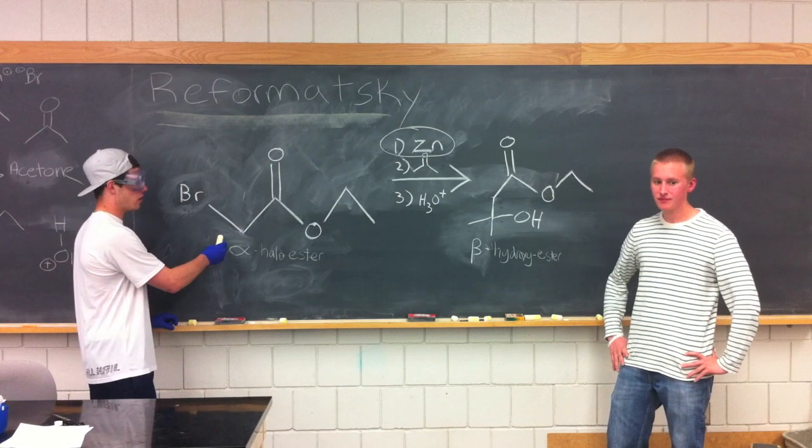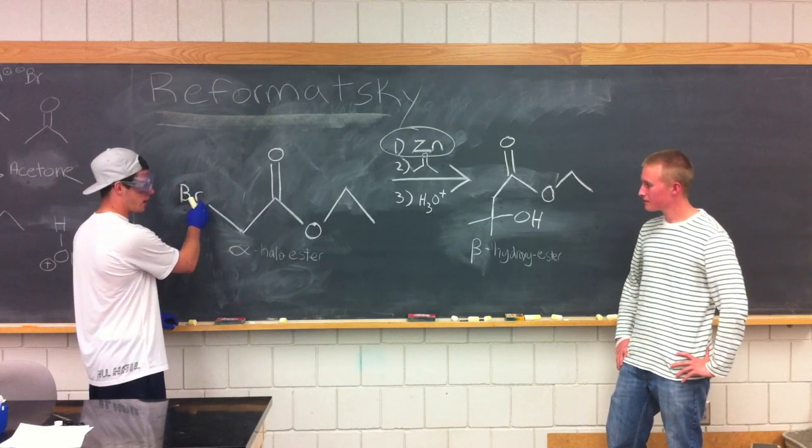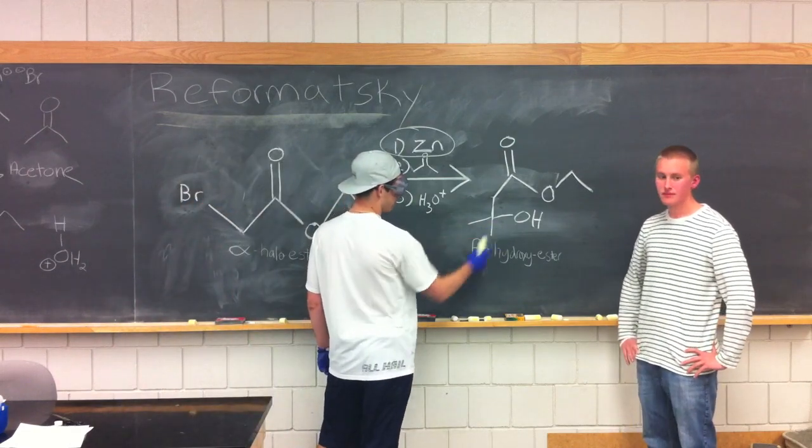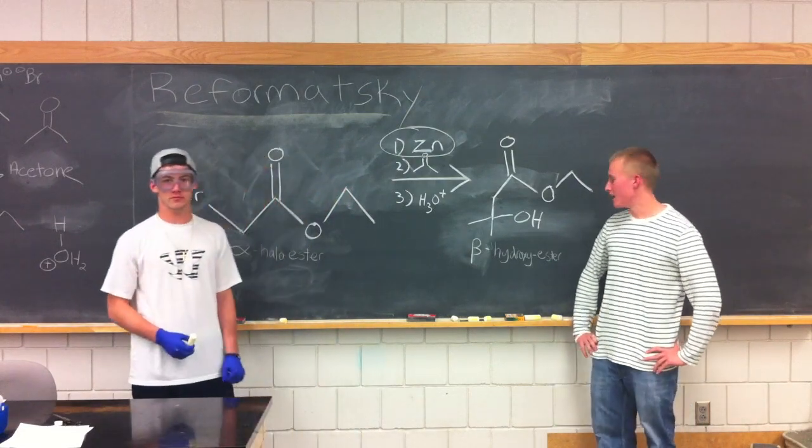The Reformatsky reaction is a carbon-forming bond where it replaces the halogen in the alpha position to form a hydroxy group in the beta position. It does this using metallic zinc to form the beta-hydroxyester.